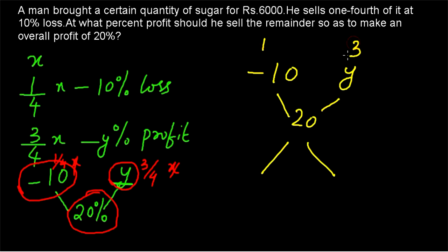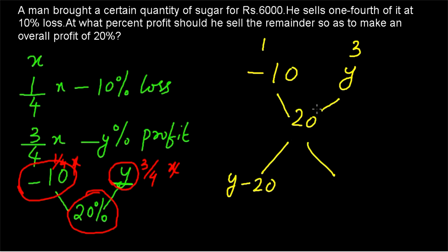Using allegation: minus 10 and Y are combined to get 20. The ratio is 1 is to 3. The difference between Y and 20 is Y minus 20. Y should obviously be greater than 20, because when Y and minus 10 are combined together we get 20. Since minus 10 is less than 20, Y must be greater than 20 to bring the mean up to 20.